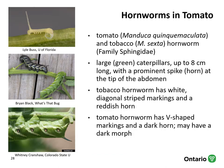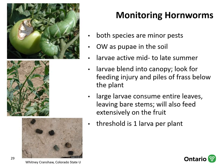If you are scouting in tomatoes and peppers, you will occasionally encounter tomato and tobacco hornworms. These large caterpillars are up to eight centimeters long, with a prominent spike or horn at the tip of the abdomen. They are usually green, but there are variations. Tobacco hornworm has white diagonal stripe markings and a reddish horn; tomato hornworm has V-shaped markings and a dark horn. Hornworms are considered minor pests in Ontario. They overwinter as pupae in the soil, and larvae emerge and are active mid to late summer. The larvae blend into the canopy very well. It's often easier to find frass below the plant and feeding injury before you actually find the insect. The large larvae can consume entire leaves and leave stems bare, and they will also feed extensively on fruit. The threshold is one larva per plant.